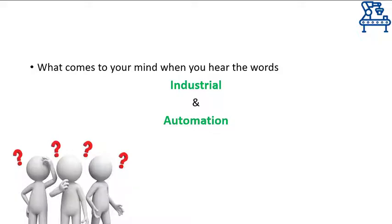Primarily, automation means the use of machines to automatically perform a task that was initially being done manually. However, proper strategies, routes, equipment, methods, controllers, and many other aspects are as important as the machines to efficiently implement automation. This course will aim to cover or touch every aspect of industrial automation so that no niche is left unattended.